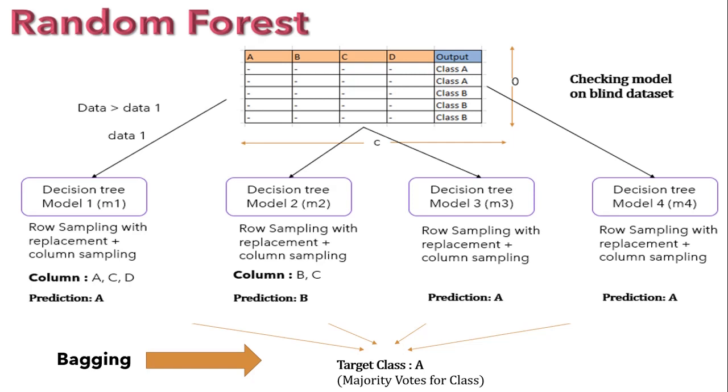We can use random forest for both classification and regression problems. During the time of regression, we take mean or median of all the outcomes we get from the different decision tree models instead of taking majority class.